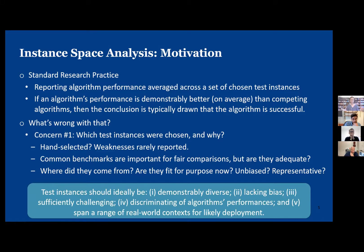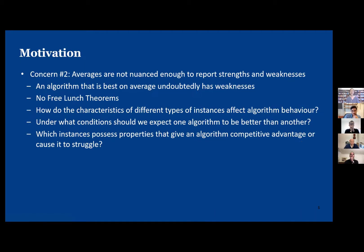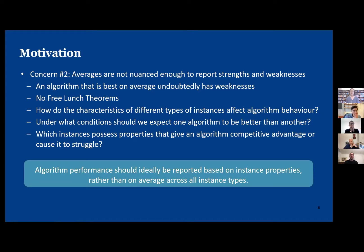The test instances should ideally have all these nice properties, and instance space analysis can visually show you whether they do. The second motivation for instance space analysis is around this 'reporting on average' thing. Averages are not nuanced enough for us to really understand the strengths and weaknesses of an algorithm for particular types of instances — we lose a lot of information when we just average across the whole collection. Just because an algorithm is best on average doesn't mean it doesn't have weaknesses. There's the no-free-lunch theorem, and we really need to understand how the characteristics of different types of instances are impacting algorithm behavior.